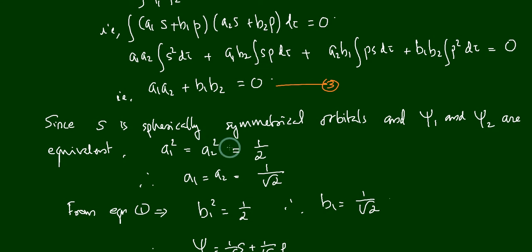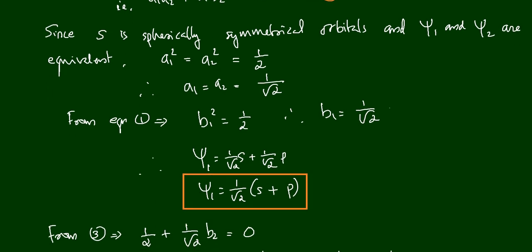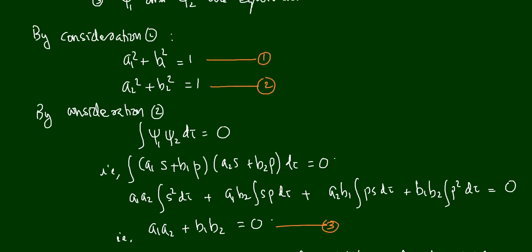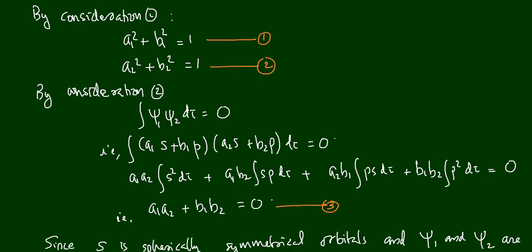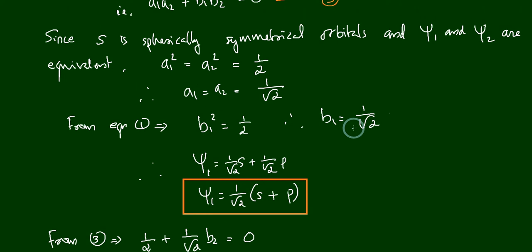Since S is a spherically symmetrical orbital and psi1 and psi2 are equivalent, we write a1² + a2² = 1/2. Because both hybrid orbitals are equivalent, we assume a1² = a2², so each equals 1/2, giving a1 = a2 = 1/√2. From equation 1, a1² + b1² = 1, and since a1² = 1/2, we get b1² = 1/2, therefore b1 = 1/√2.